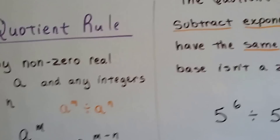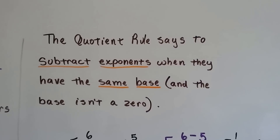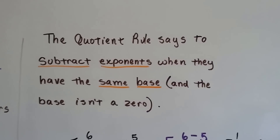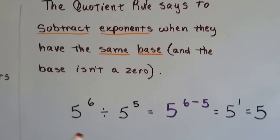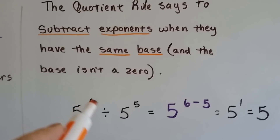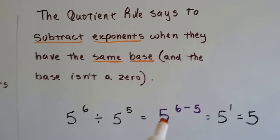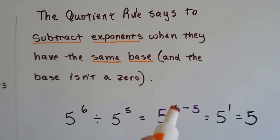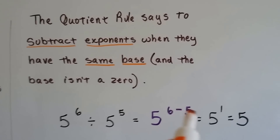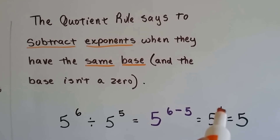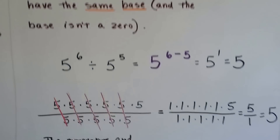I'm going to show you why this works. The quotient rule says to subtract exponents when they have the same base and the base isn't 0. So let's say we have 5 to the 6th power divided by 5 to the 5th power. That means 5 to the 6th minus 5th power, leaving 5 to the 1st power, which is 5.